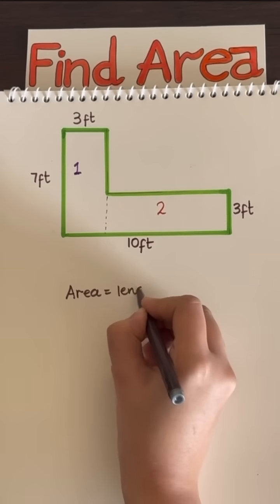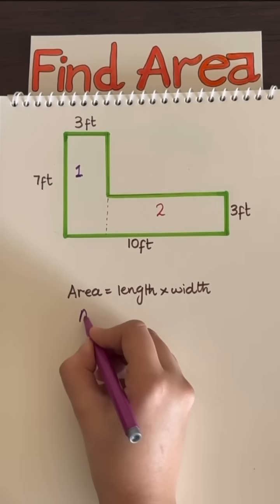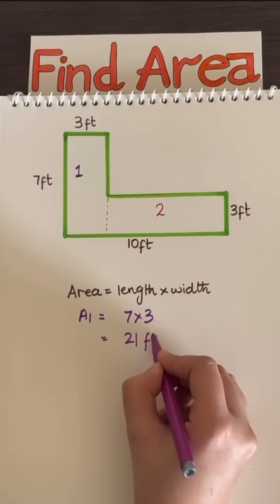Now we know that area of the rectangle is length times width, which is one side times another side. So the area of rectangle one is seven times three, which is 21 square feet.